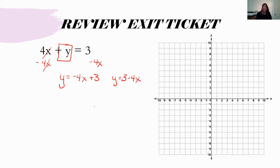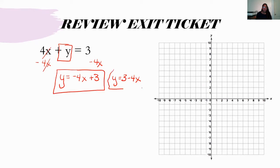You could also write it as 3 minus 4X, as long as you know that negative 4 is your slope because it's adjacent to your X. And that 3 is your constant, and that's going to be your Y-intercept. So now I have my equation of the line. Then we're going to graph. We'll start at our Y-intercept — in this case, my Y-intercept is 3. So whatever the constant is, the one that does not have the X, that is going to be your starting point. My slope in this case is negative 4.